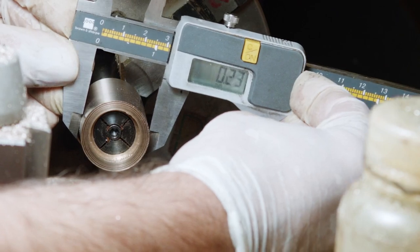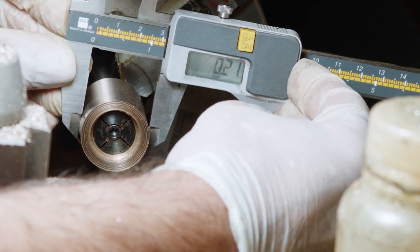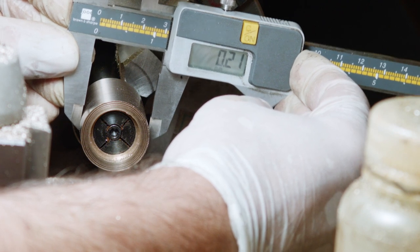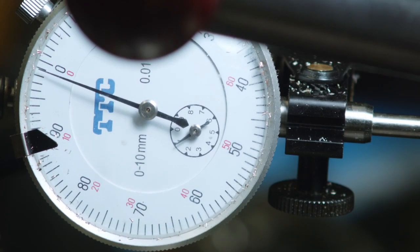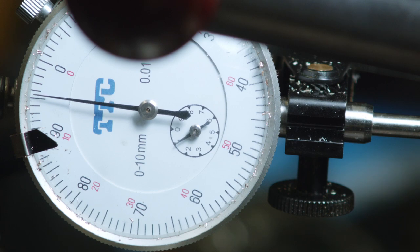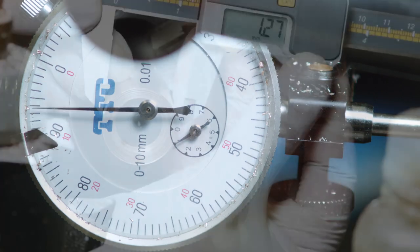This requires rather precise work as the interference between the bushing and the body of the sheave is about 20 hundredths of a millimeter.